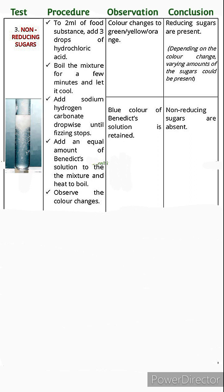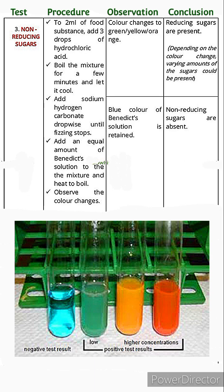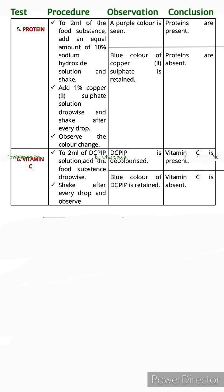Observations for non-reducing sugars: if the color changes from blue to green, yellow, or orange, reducing sugars are present in varying amounts. If you find the sequence of color changes difficult to recall, just state the final color change — e.g. 'color changes to brown' — without listing the sequence. If the blue color of Benedict's solution is retained, then sugars are absent.